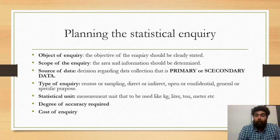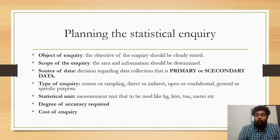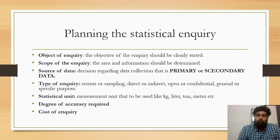The source of data can be primary or secondary data — in this example, secondary data is used. The type of inquiry is the sampling type. We consider the number of people, degree of accuracy, and the cost of inquiry. These are the data, statistics, and research elements of the planning process.